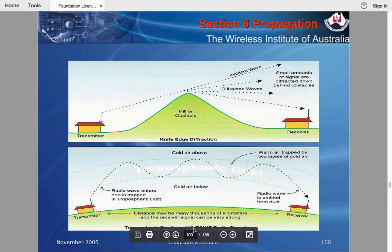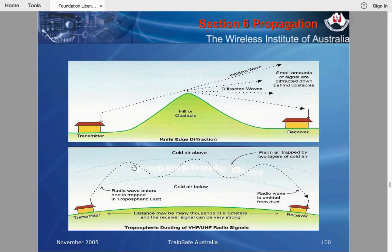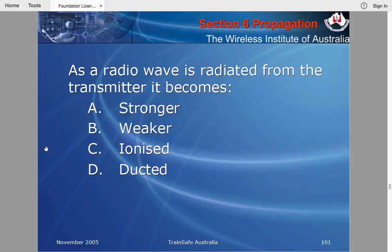The lower diagram shows tropospheric ducting on VHF and UHF. There are two layers of cold air with a warm air layer in between, and the wave gets trapped between these layers, sometimes traveling thousands of kilometers. In the old days, television's Channel O on 50 MHz — which falls in the amateur six-meter band — would sometimes be picked up in Melbourne from Brisbane due to ducting. Tropospheric ducting generally occurs in the summer months.